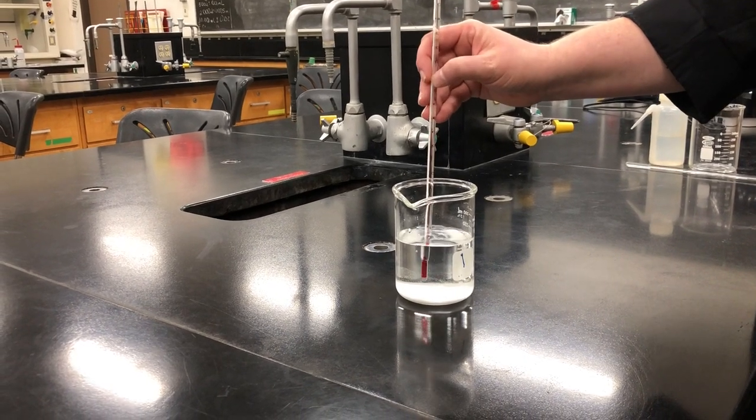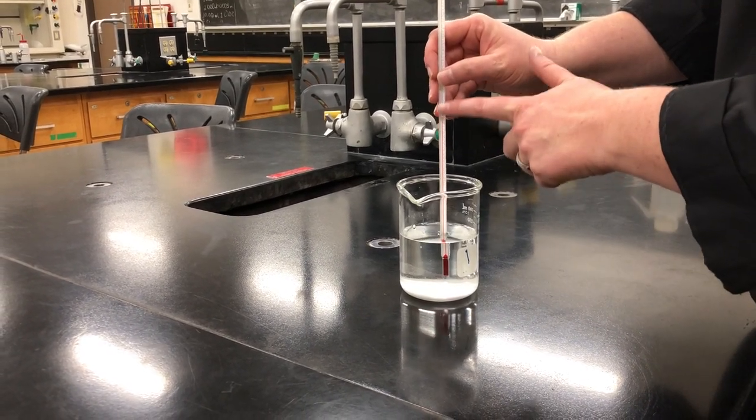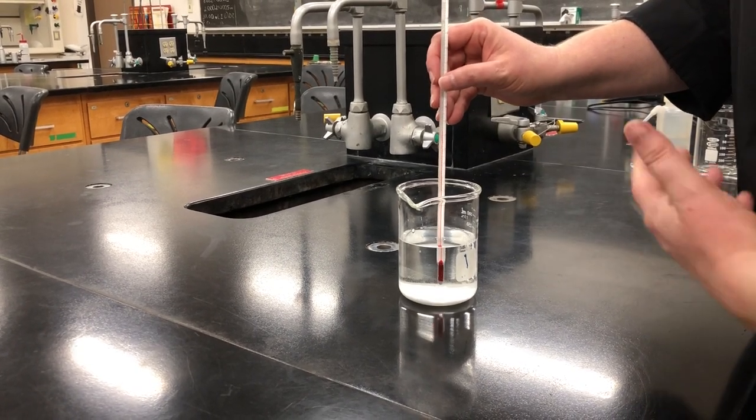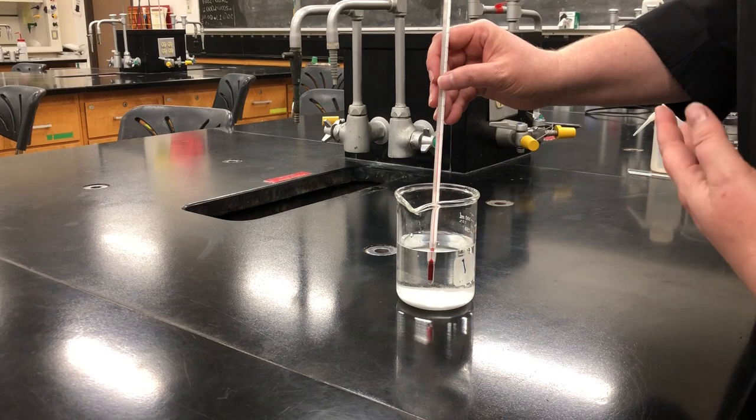We're just going to give it a little swirl, and then when you see the temperature, the red alcohol inside of the glass there, you want to read the temperature once it has stopped moving.